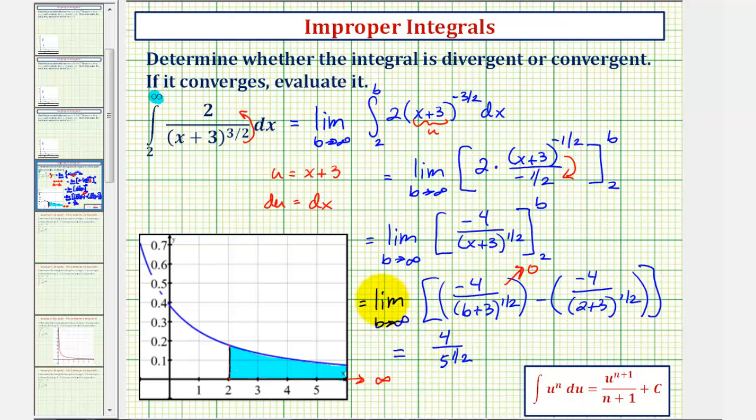So because this limit exists, we say the integral converges and it's equal to 4 divided by 5^(1/2), or 4 divided by the square root of 5.